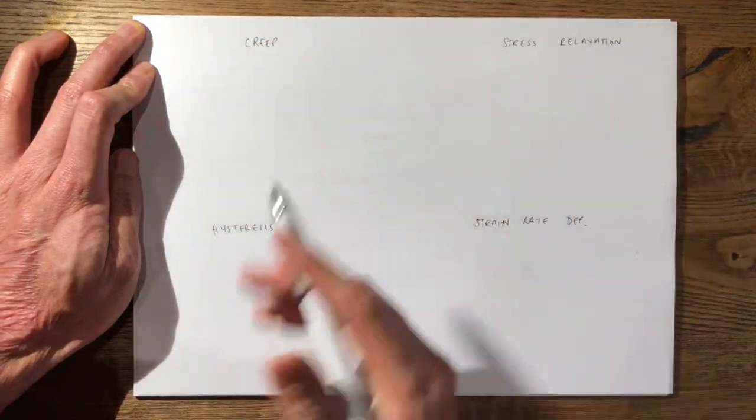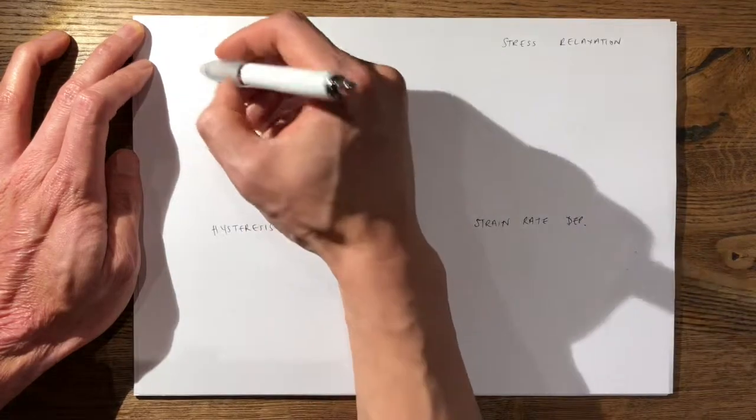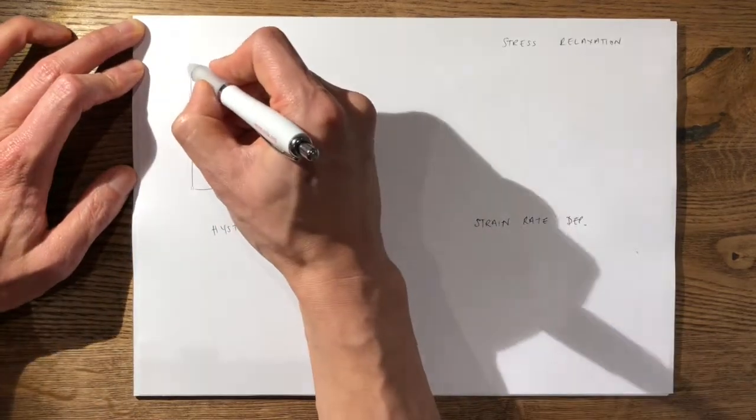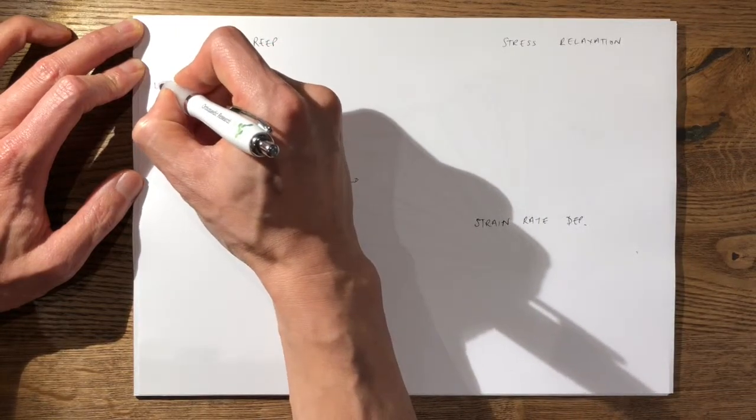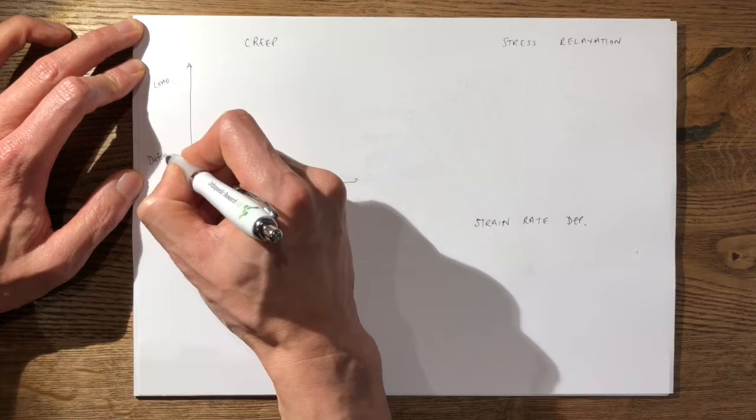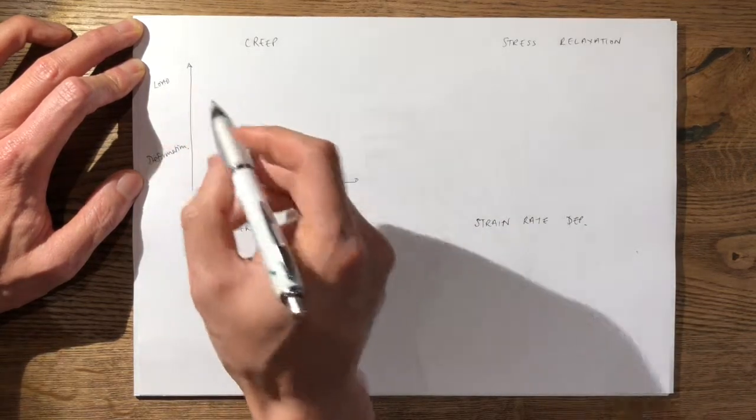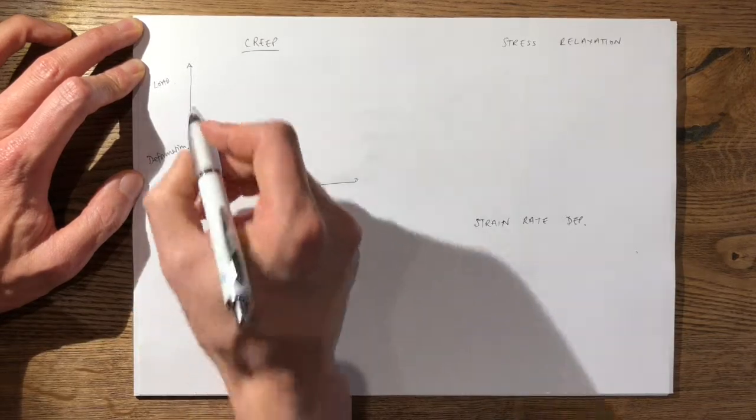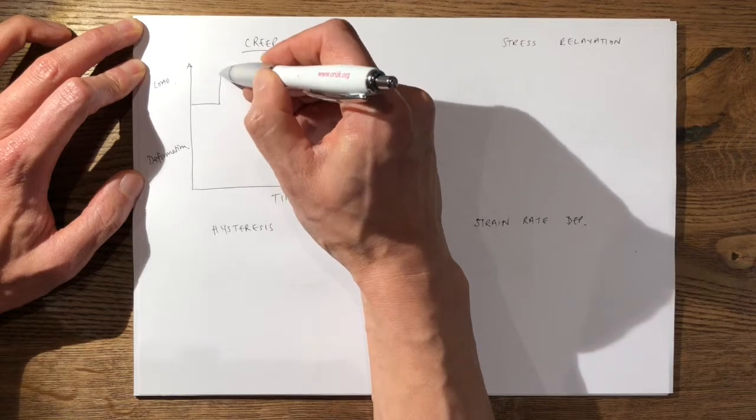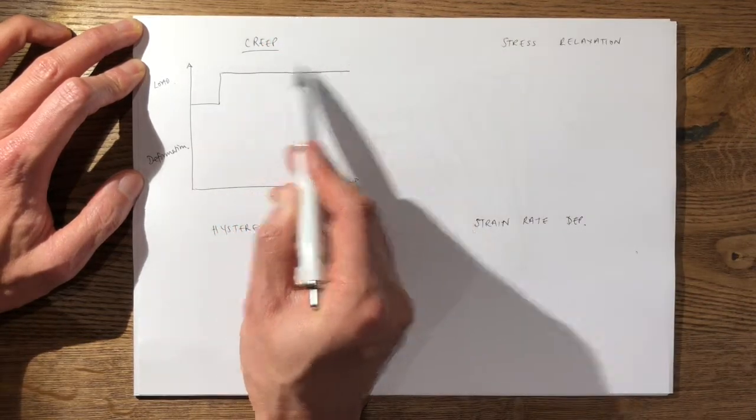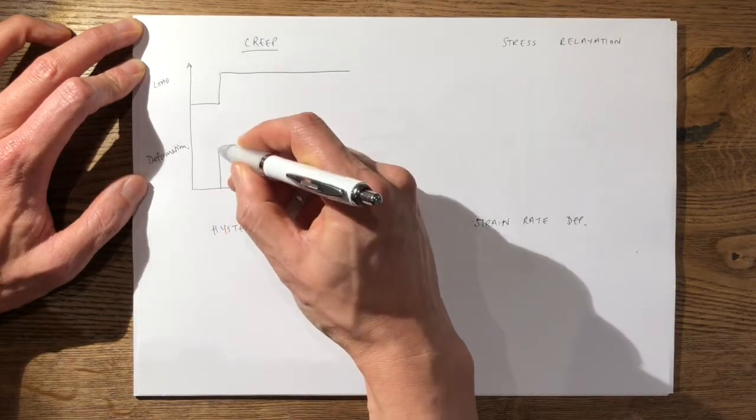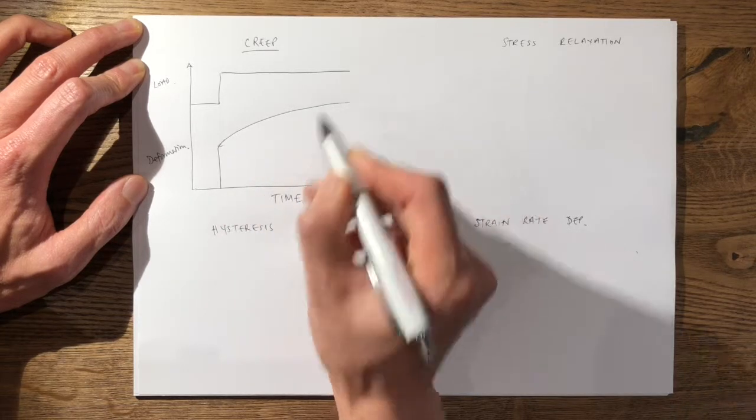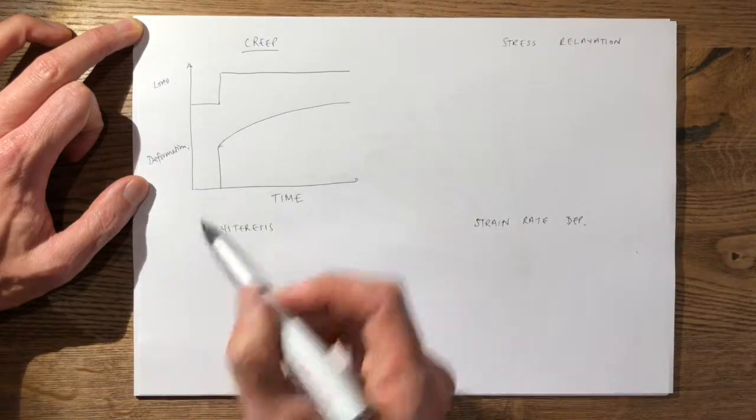So for creep, each of these you need to know how to draw a graph. So for creep you draw both your axes. First of all, you have time on the x-axis and on the y-axis you have two parts of it. You have the load up here and deformation down here. The reason you have two is because creep is defined as the time-dependent deformation under a constant load. So for example when you have a constant load illustrated by this plateau line, you have initially a deformation but as time goes on it continues to deform. Hence the time-dependent deformation under a constant load.